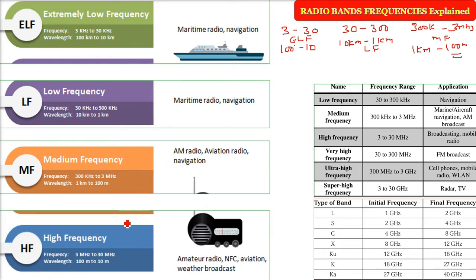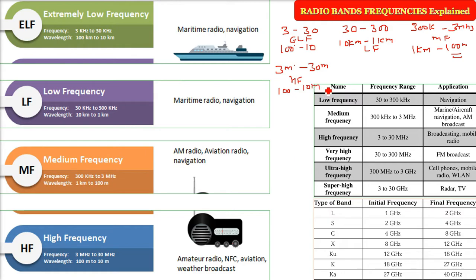Then we have the High Frequency (HF), from 3 megahertz to 30 megahertz. The wavelength will be 100 meters to 10 meters — 10 meters is roughly the length of a room in your house. Applications here include amateur radio, NFC, aviation, and weather broadcasting.